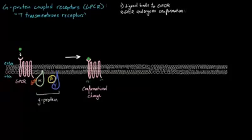What happens next is, because of this conformational change, our alpha subunit, which I'm going to draw in here, is actually going to exchange this GDP for GTP.